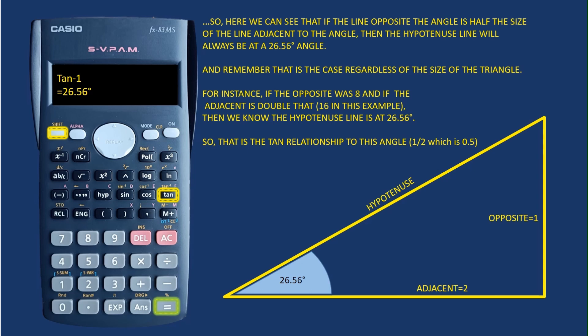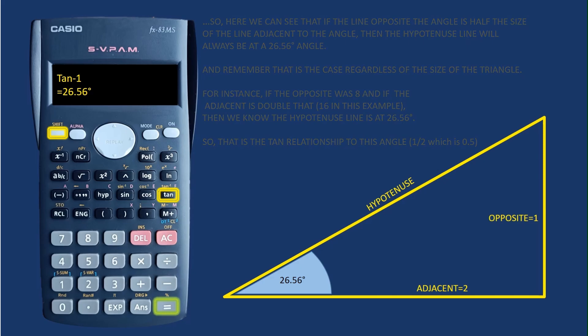That's regardless of the size of the right angle triangle, whether it's the size of a house or small enough to fit on a page. If the opposite is only half the size of the adjacent, then the angle will always be 26.56 degrees.